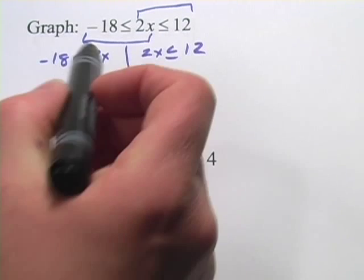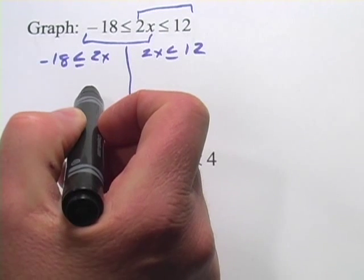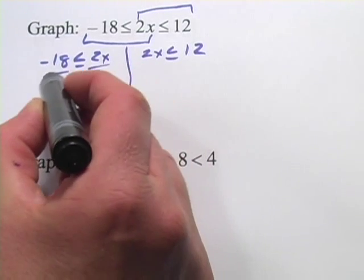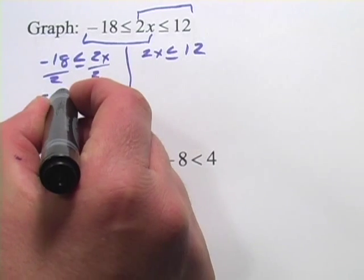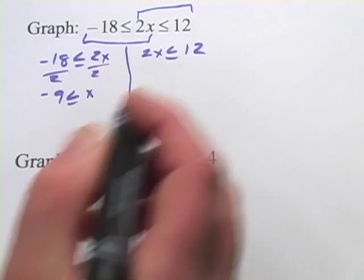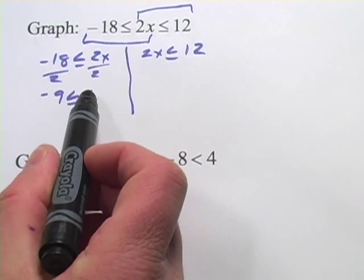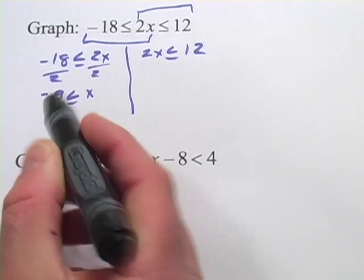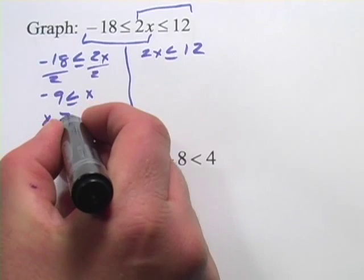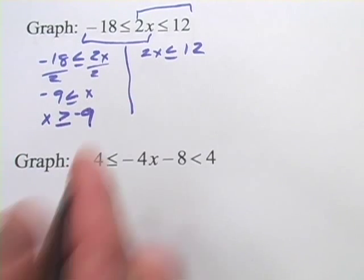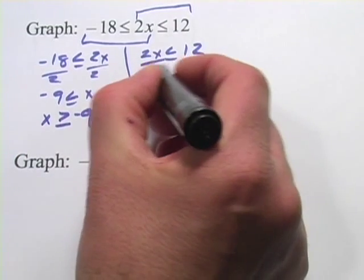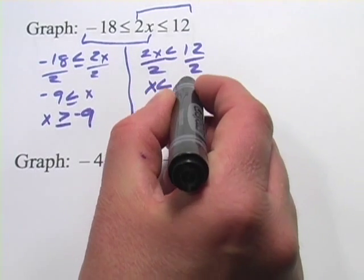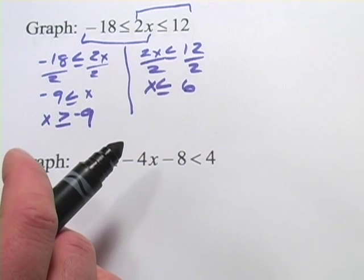To solve these we're simply going to do what we would to solve for x in an equation. I'll divide both sides by 2 and we get negative 9 is less than or equal to x — or, reading it the other way, x is greater than or equal to negative 9. Then over here we divide by 2 and we get x is less than or equal to 6. So that's the first step.